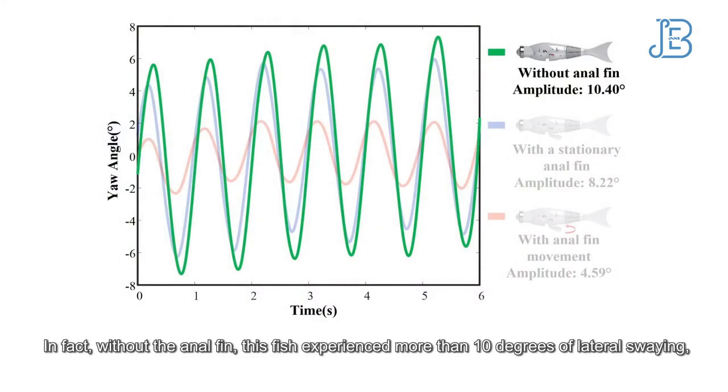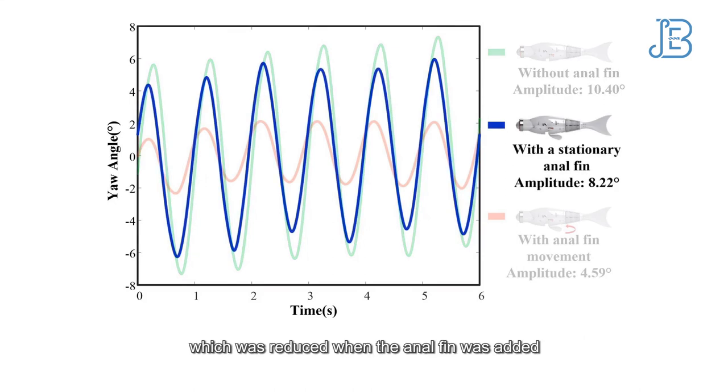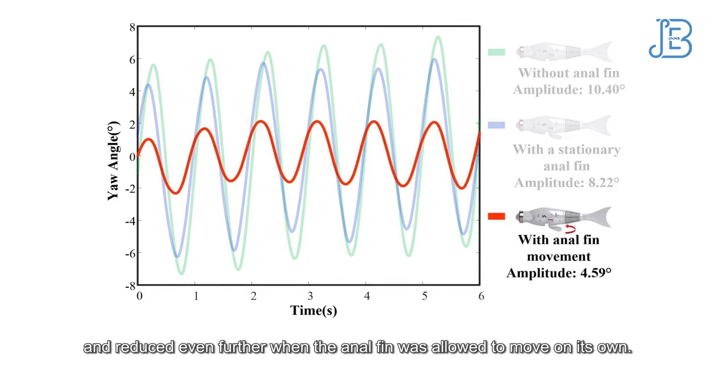In fact, without the anal fin, this fish experienced more than 10 degrees of lateral swaying, which was reduced when the anal fin was added, and reduced even further when the anal fin was allowed to move on its own.